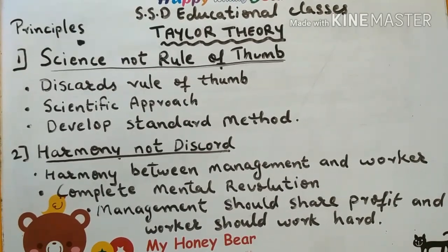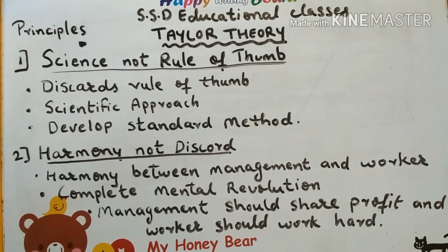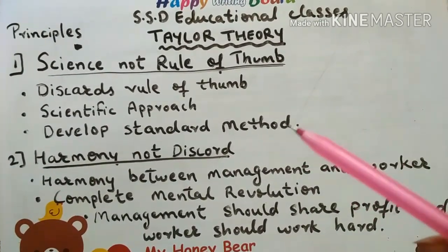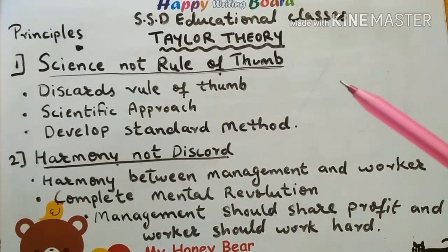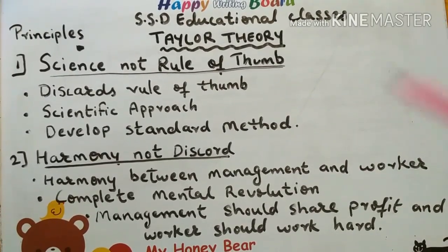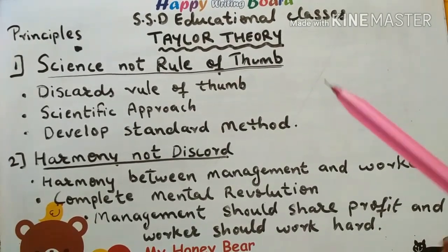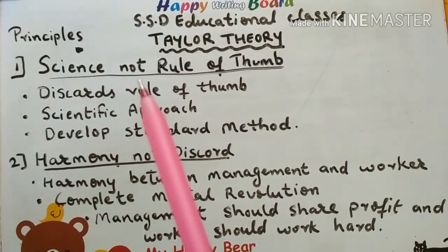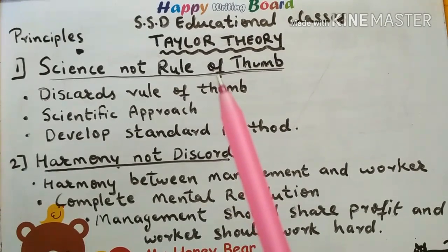When you are doing management and there is no consistent result, sometimes you can do it better. So Taylor has told us that we always need to follow science — we don't need to follow old rules, but we need to experiment.